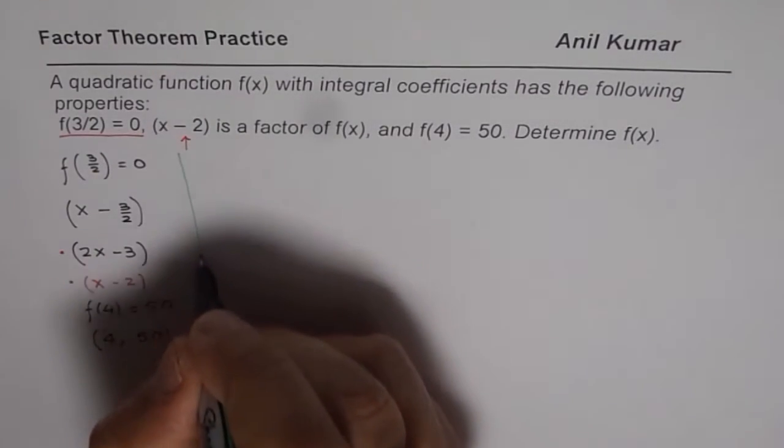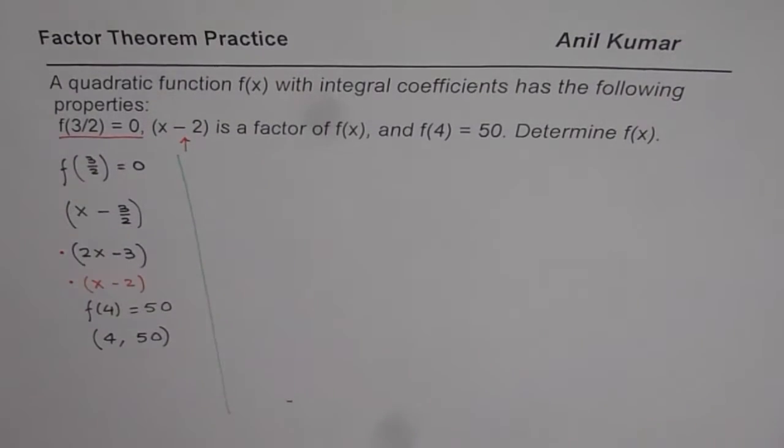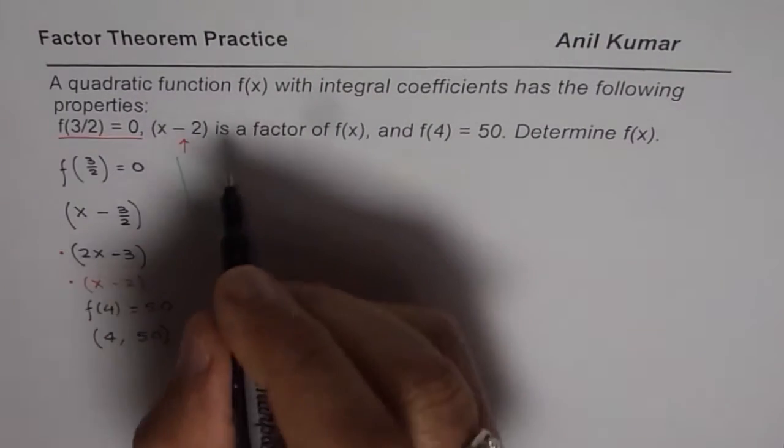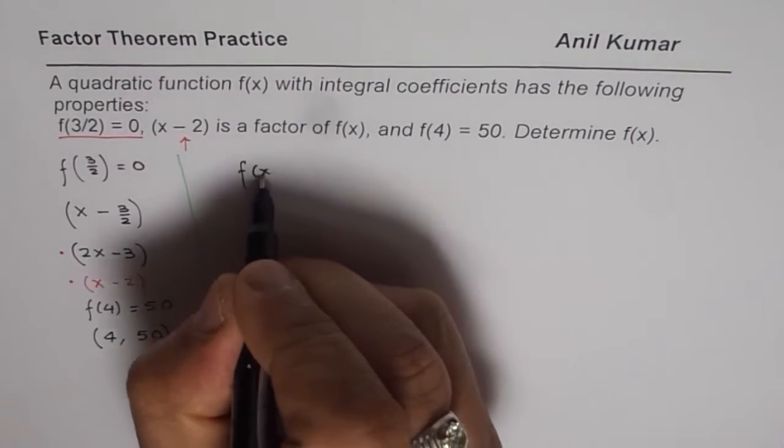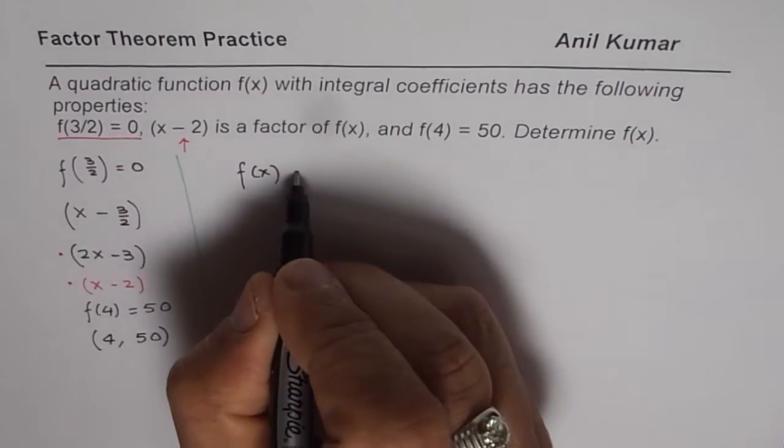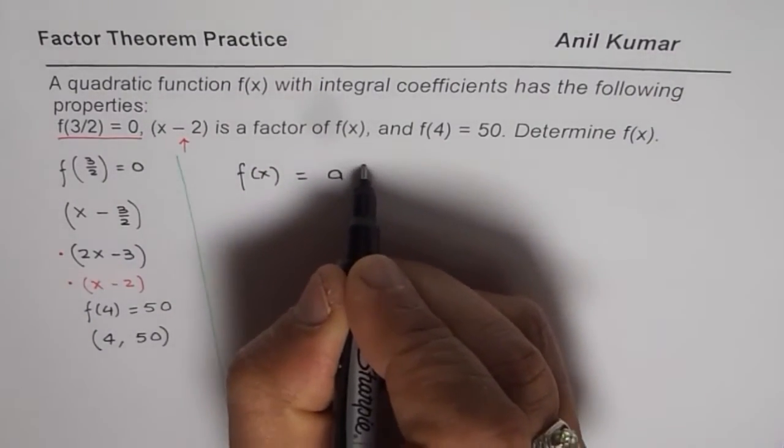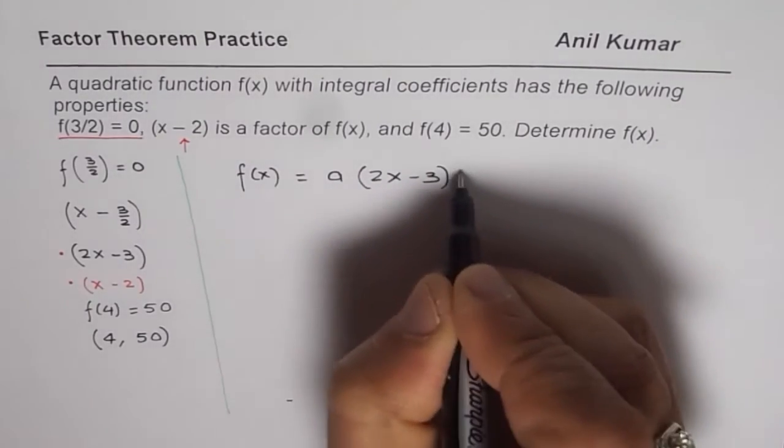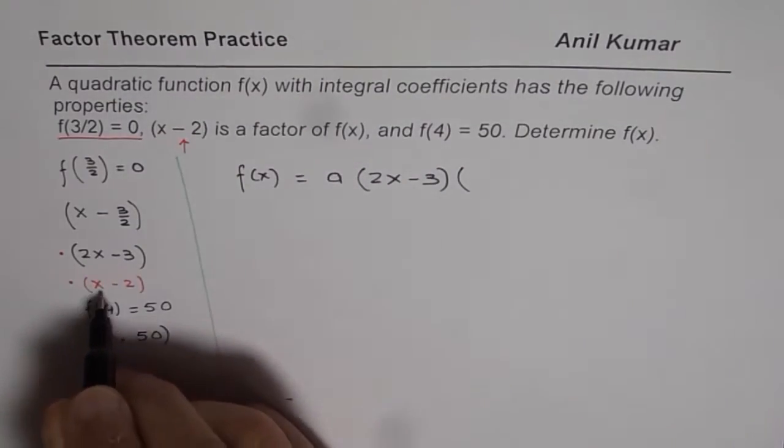Now, let us begin to put it in place for the equation. Based on this information, we are looking for a quadratic function f(x). Let's write f(x), quadratic function with integral coefficients. We have got two factors already. So we could write this as a times one of the factors is 2x minus 3 times the other factor is x minus 2.